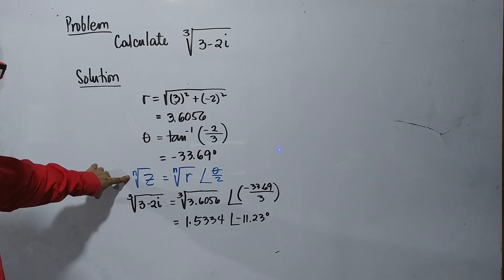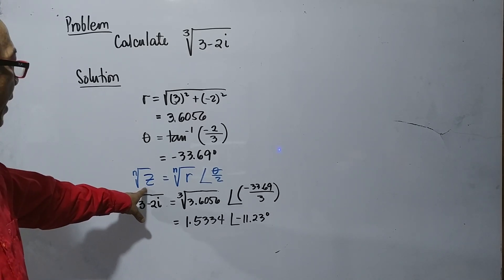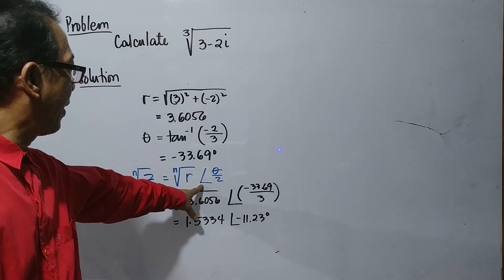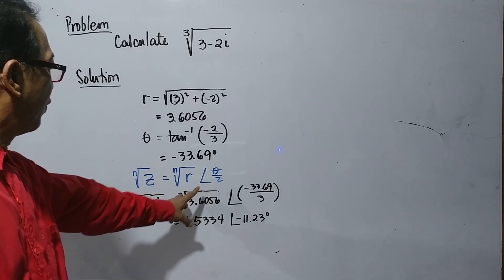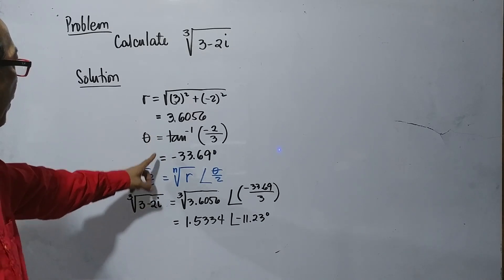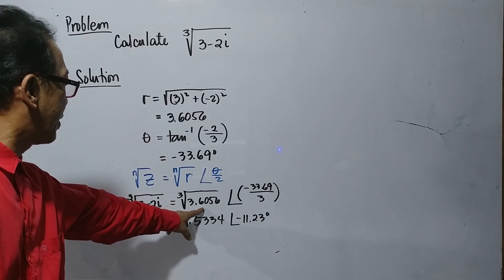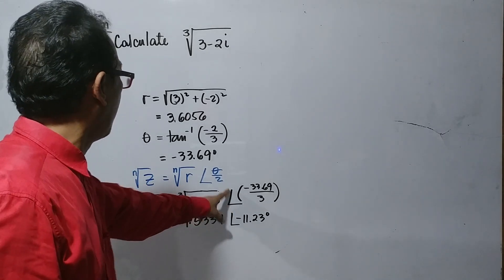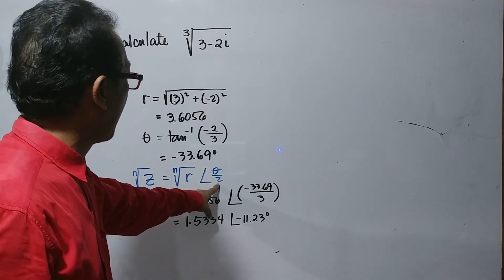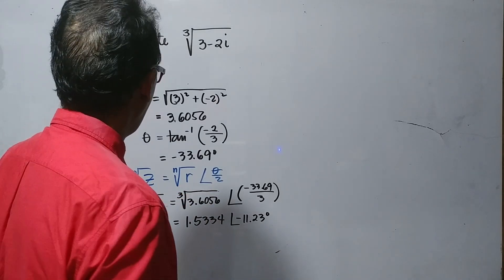Our formula is: the n-th root of z equals the n-th root of r times the angle of theta over n. Substituting values, we have the cube root of 3.6056 times the angle of negative 33.69 divided by n.